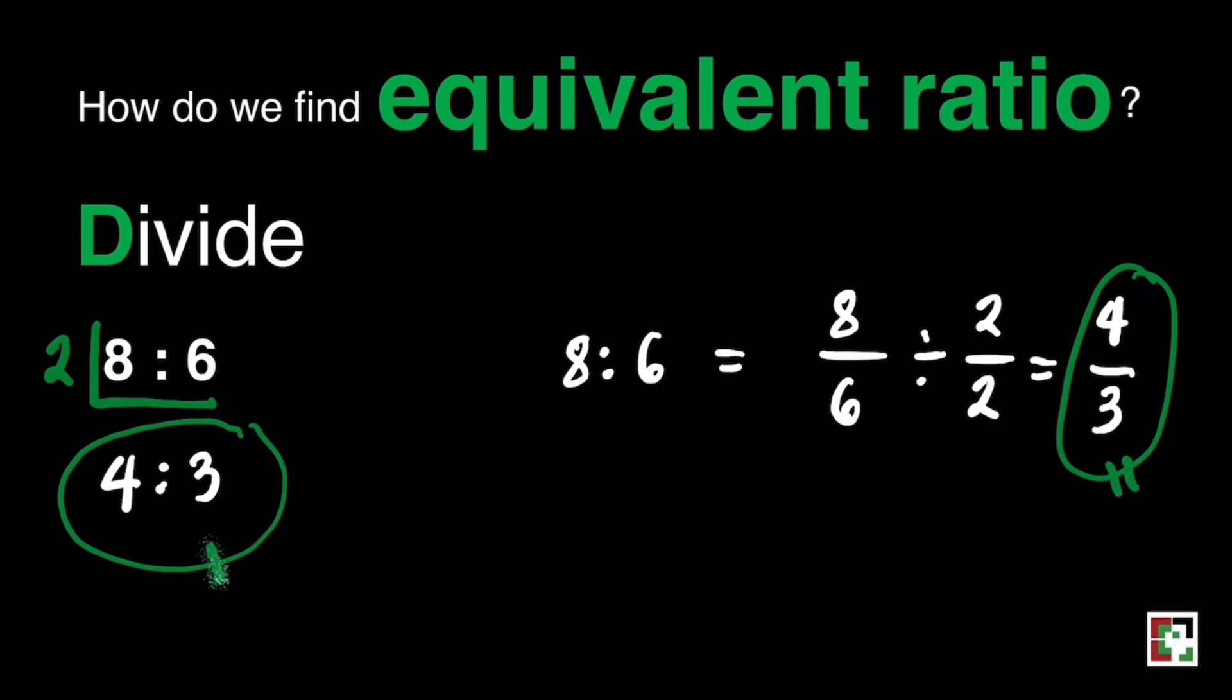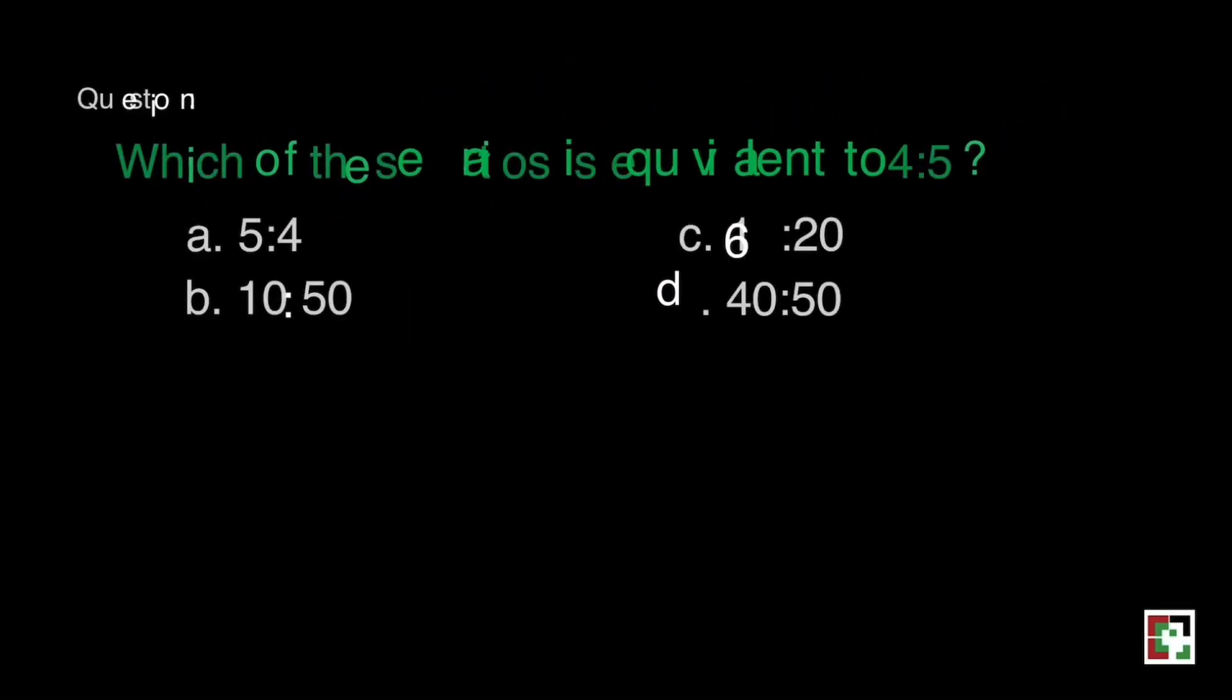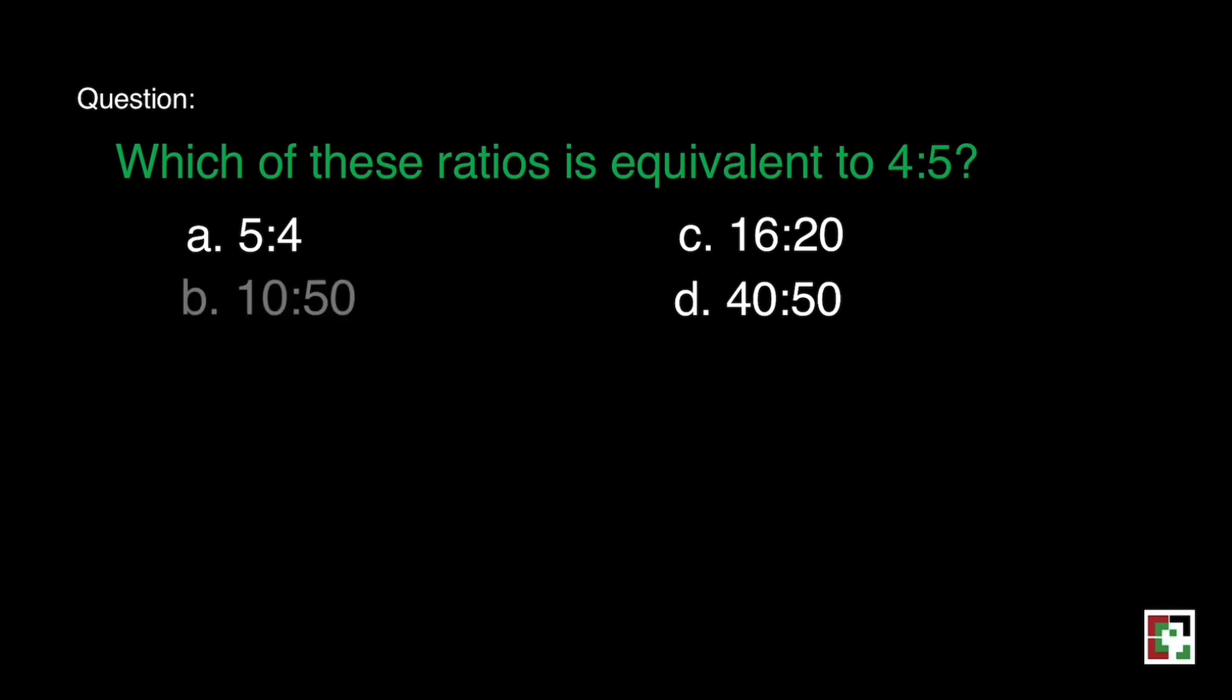Let's answer some questions here. Which of these ratios is equivalent to 4 is to 5? Is it A, 5 is to 4? B, 10 is to 50? C, 16 is to 20? Or D, 40 is to 50?